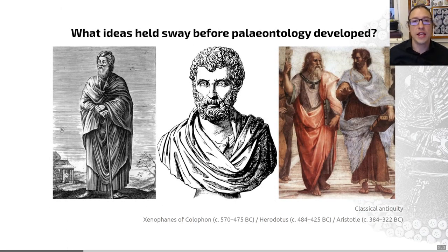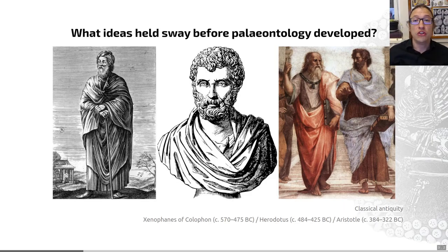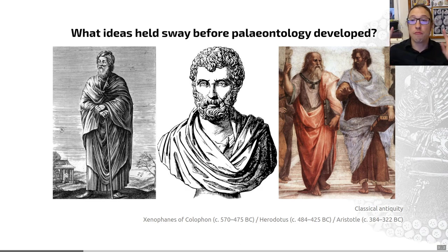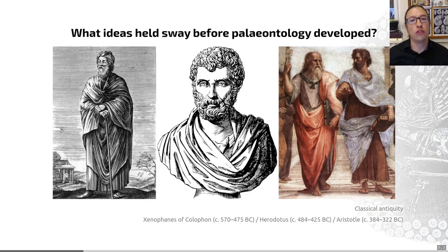On the left-hand side here you can see Xenophanes of Colophon. This was a Greek philosopher and poet, and he realised that fossil shells suggested that the rocks hosting those shells had originated in the sea. He suggested that the world had formed from the condensation of water — he described it as a primordial mud — and he's the first person to use fossil evidence in a theory of the history of the earth.